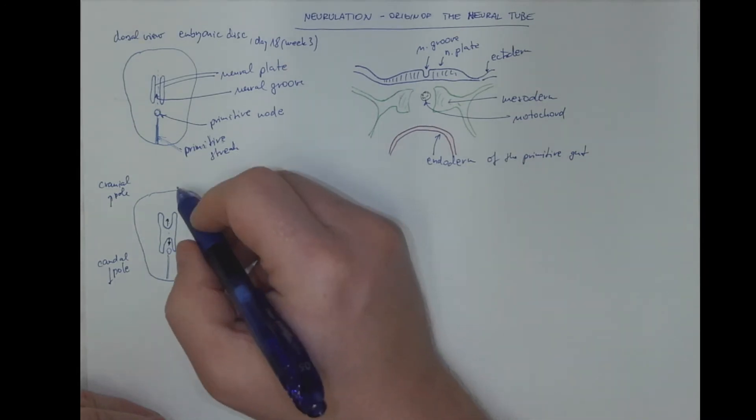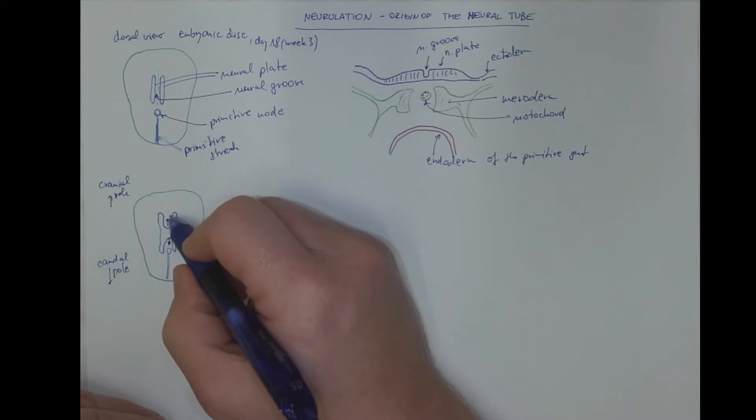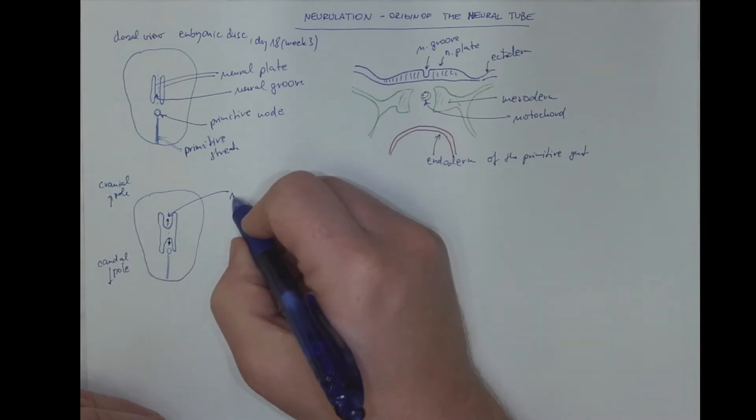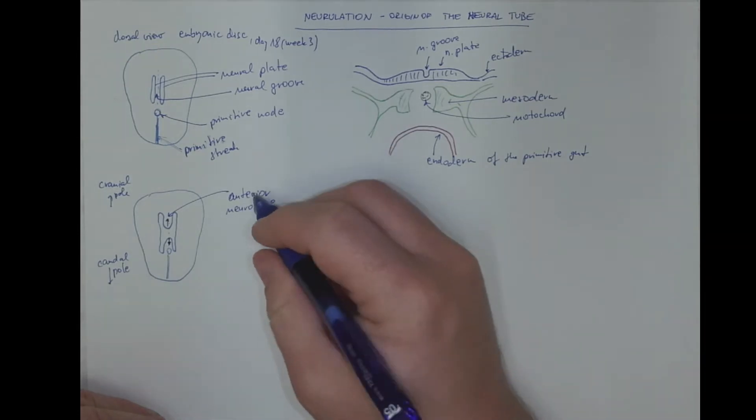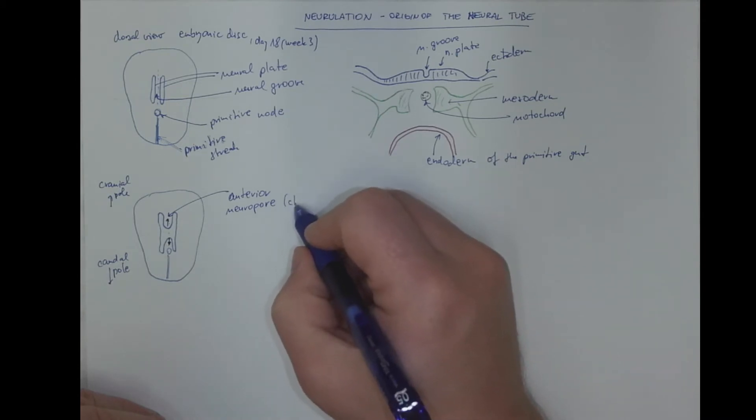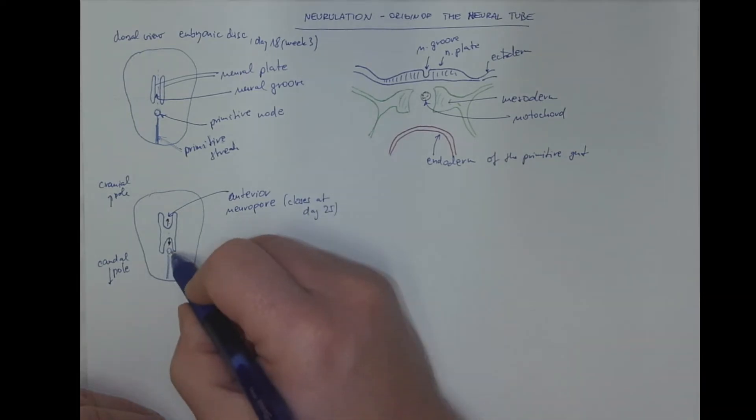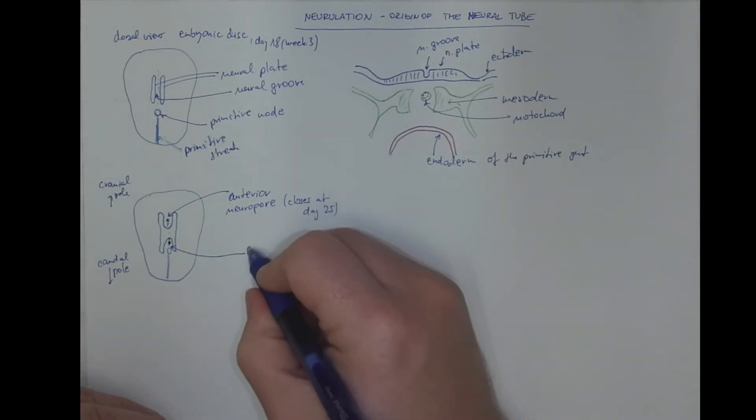The last parts to be closed are called the neuropores. This is the anterior neuropore, which will close at day 25. And this will be the posterior opening, or posterior neuropore.